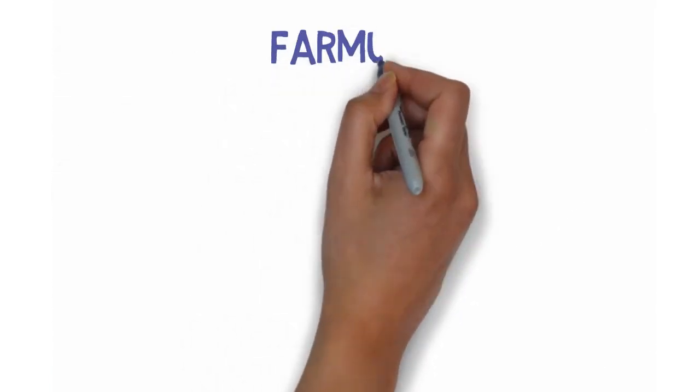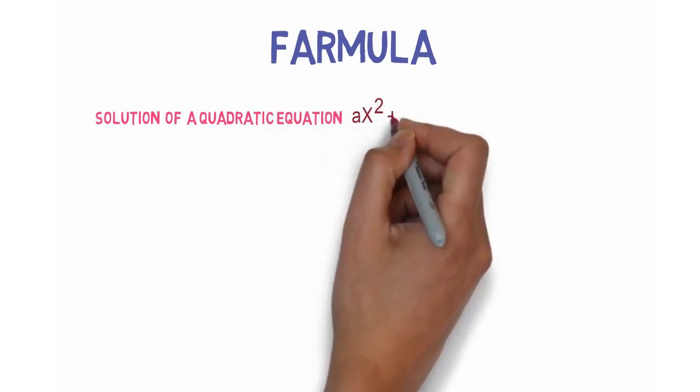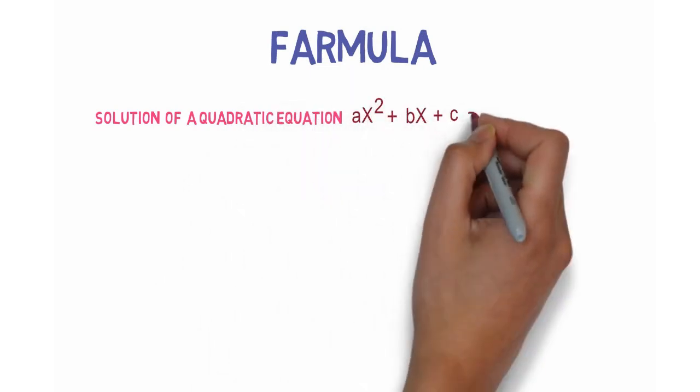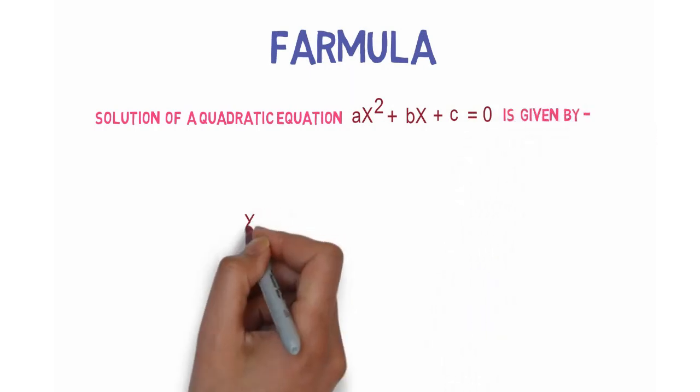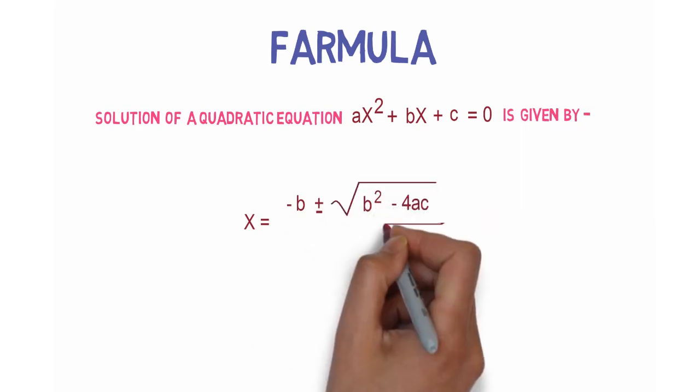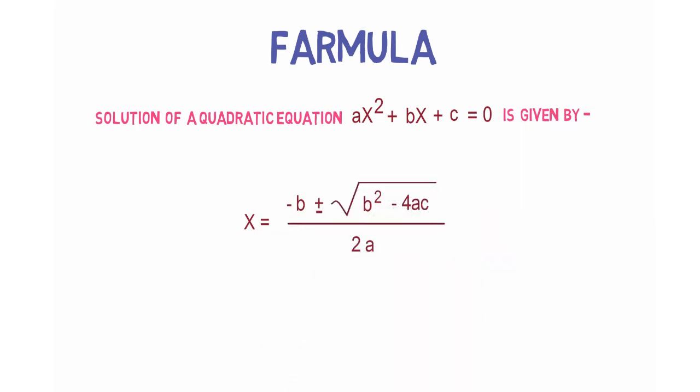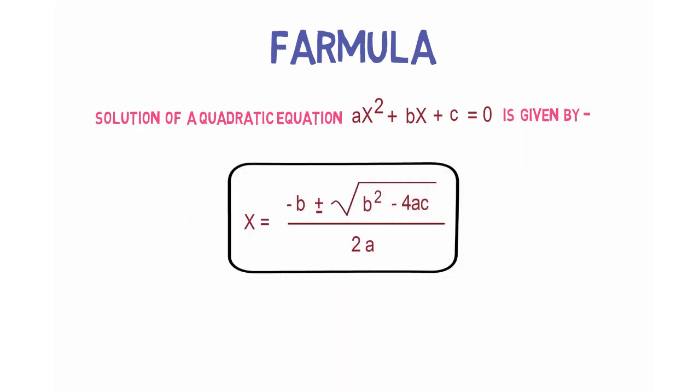Now let's move on to the second portion of this session, which is the standard solution of a quadratic equation. The solution of a quadratic equation ax² + bx + c = 0 is given by x = (-b ± √(b² - 4ac))/2a. Using this standard formula, we can figure out solutions for all kinds of quadratic equations.